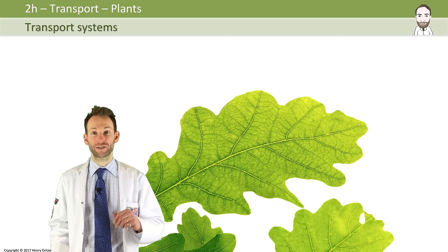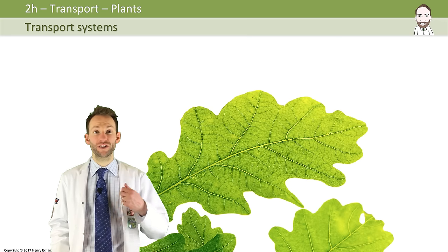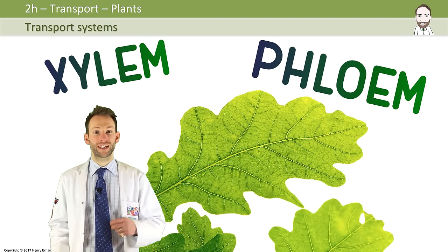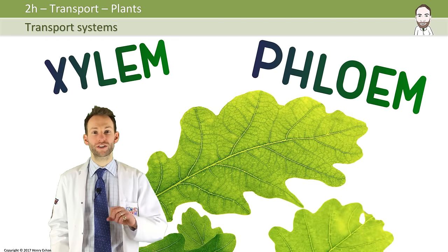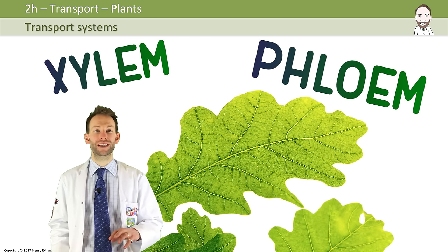These veins carry important substances around the plant to where they are needed. There are two types of vessel within a vascular bundle, the xylem vessels and the phloem. You can clearly see the veins on this oak leaf here branching into smaller ones in order to try and reach every single cell.